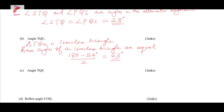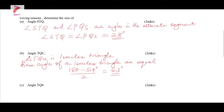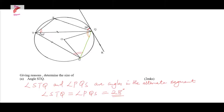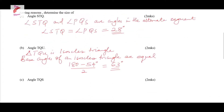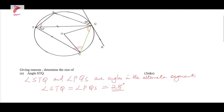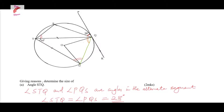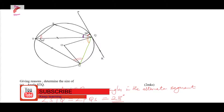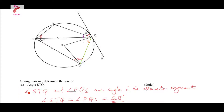The reason: base angles of an isosceles triangle are equal, using triangle TQU. Let's go to the third one: angle TQS. Angle TQS is this angle here. We can use the angles we've already obtained — this one is 63 degrees, and this one is 63 degrees.